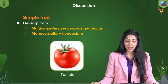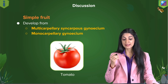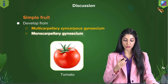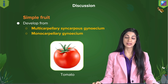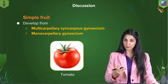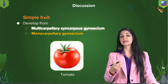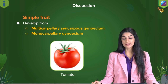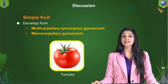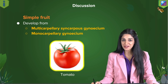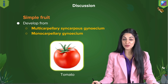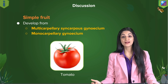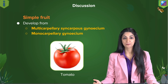A simple fruit has a monocarpellary gynoecium or a multicarpellary syncarpous gynoecium. The example is the true fruit tomato — yes, tomato is not a vegetable, it is a simple true fruit and its edible part is very much the ovary.